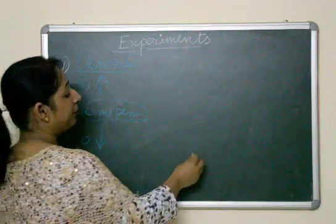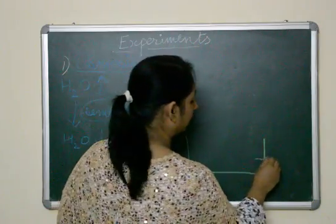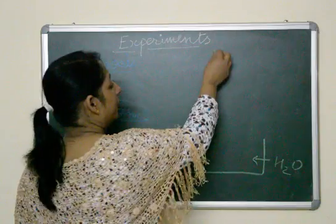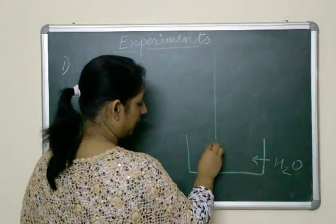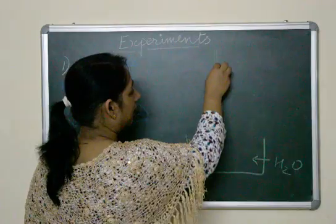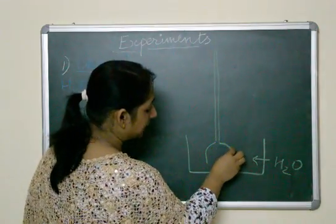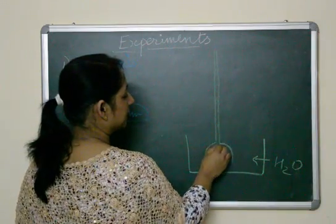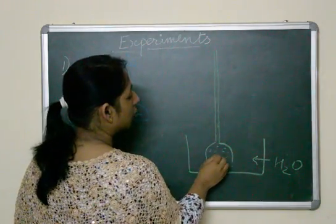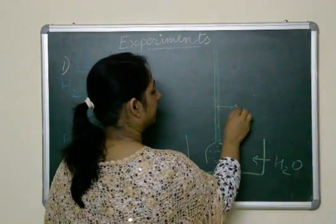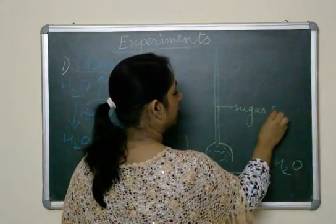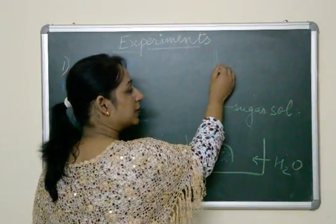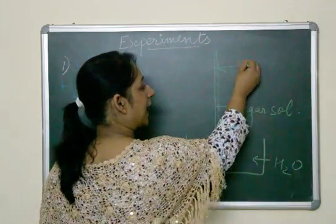For this experiment, we are going to take a beaker filled with water, and in this beaker we are going to place a thistle funnel. In this thistle funnel we are going to place sugar solution, and we will mark the level of the sugar solution as A.